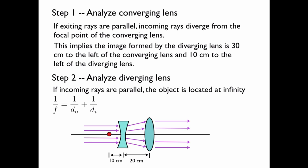Inserting that knowledge into this equation, keeping in mind that 1 over infinity is 0, we find that the focal length is equal to the distance of the image.